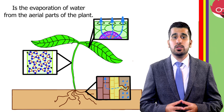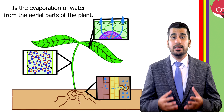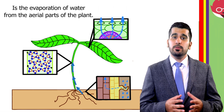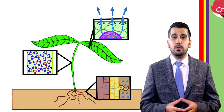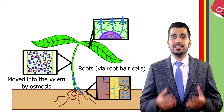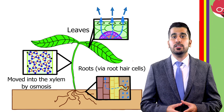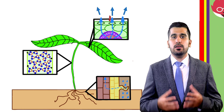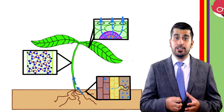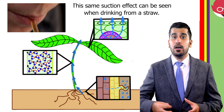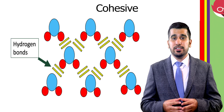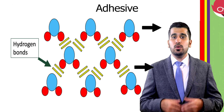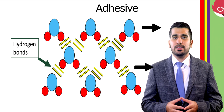Transpiration is the evaporation of water from the aerial part of the plants, i.e. the leaves. It provides a suction effect that pulls water from the roots to the top of the plant. Water moves into the roots and then into the xylem via osmosis, where it is carried to the leaves and is used for photosynthesis. Not all of the water is needed by the plant, and excess water is lost. Evaporation of water from the leaves creates a tension and a suction effect, pulling water up the xylem tissue. Water molecules are cohesive because of hydrogen bonds, which hold water molecules together. Water is also adhesive, allowing it to stick to the walls of the xylem. A continuous column of water is formed and therefore pulled up the stem, forming what we call a transpiration stream.